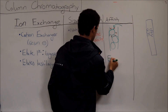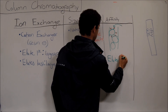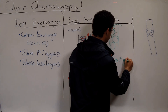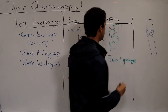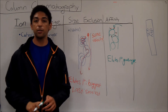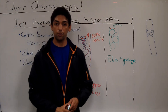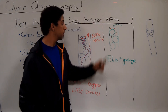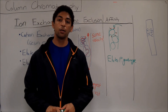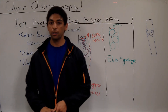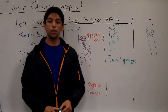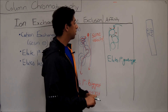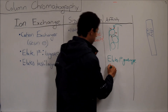In affinity chromatography, the thing that elutes first is all of the garbage — everything coming out first is stuff you are not looking for, stuff you're going to throw away. The reason is that the stuff you do want is still bound to the ligand. So how do we get the stuff that we want out? There are actually a couple of different ways to make it elute. First, we can add in salt.